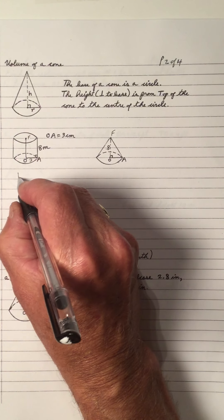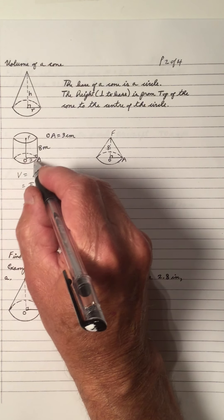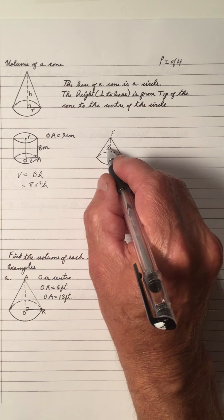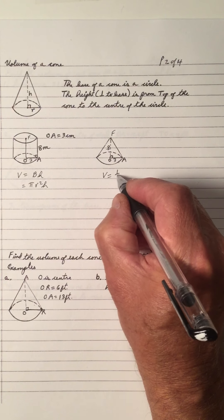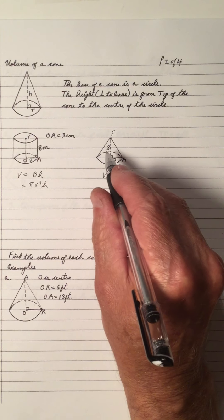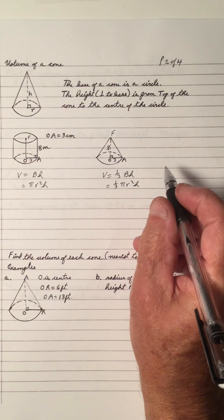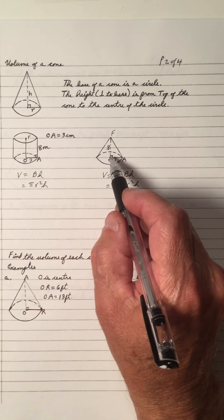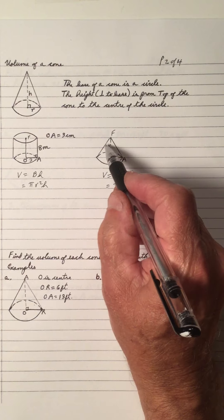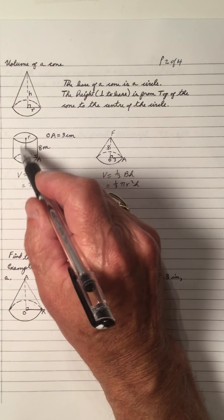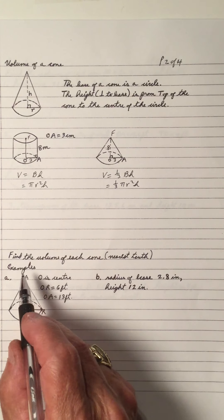If that be the case, the volume of a cylinder is base area times height, which is π r² h, because the base of a cylinder is a circle. And since the cone has the same dimensions of 8 high and 3 radius, that means the cone is going to be one-third of the volume of the cylinder. So that's one-third π r² h. In a lab or in science, if you could fill up this cone with water, it would take three quantities of water in this cone poured into this to fill up the cylinder. So the cone is one-third of the volume of a cylinder. Let's work out some examples.